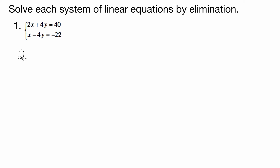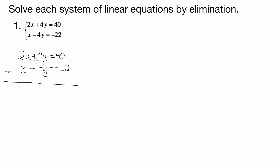Let's take a look at it. So 2x plus 4y equals 40, and x minus 4y equals negative 22. Now, I want to add them together. The goal is to eliminate a variable. If I add these two together, the x is still there, but I've got a positive 4y and a negative 4y. So when I add them together, the y is going to drop out — I'll be able to eliminate it. So I can just add the two equations together as-is.